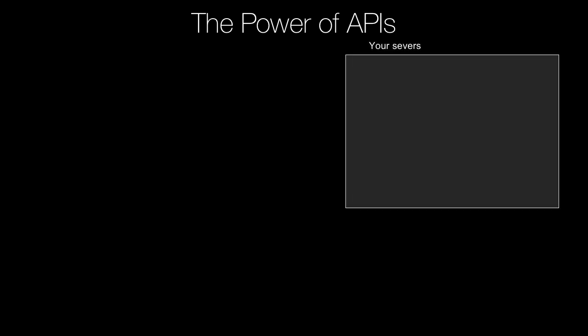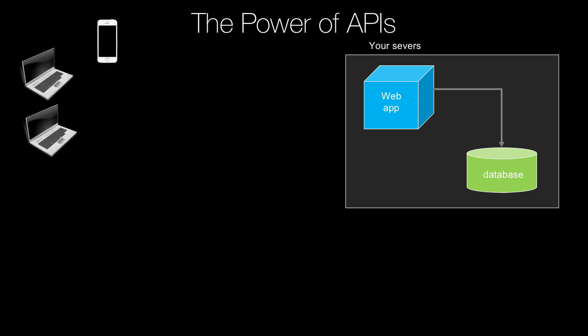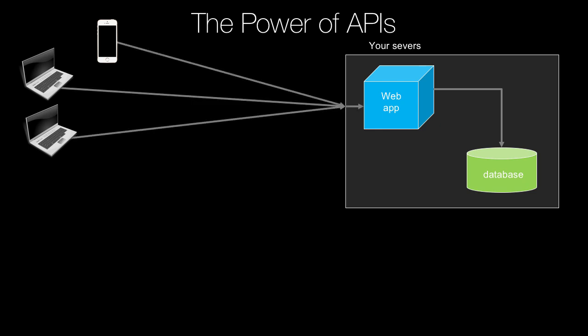Let's start with a quick overview and big picture of where we're going and the power of APIs. So we have our web application running over here on some servers, probably has a web app section, probably talks to a database. People are going to come using their browsers and make requests to our website — maybe they're on their MacBook or their phone — and they're going to request directly to our HTML pages. That's going to talk to our database, great stuff comes back, here's our page.